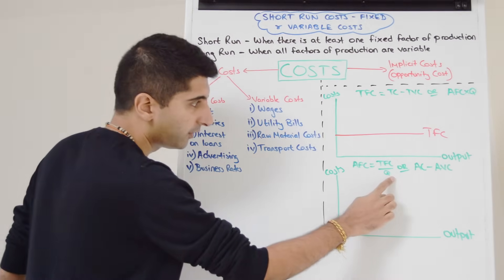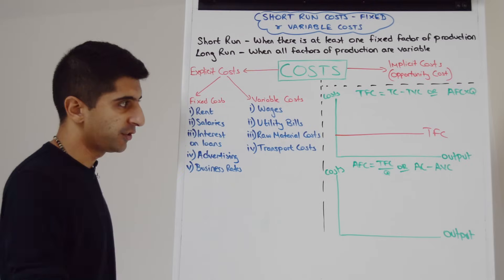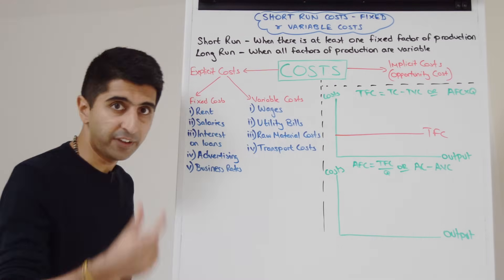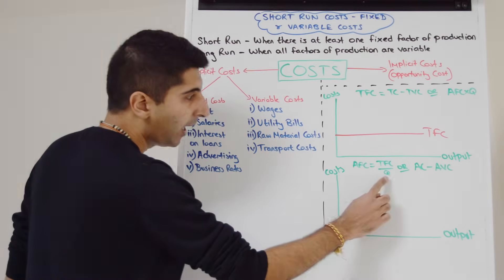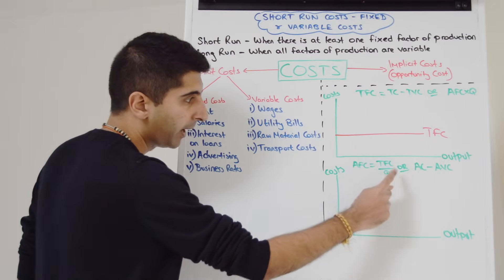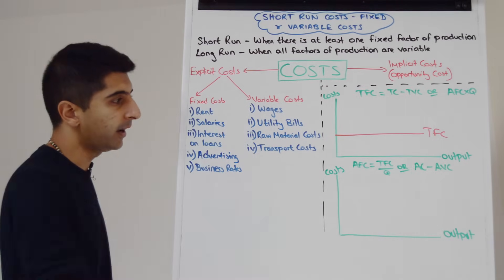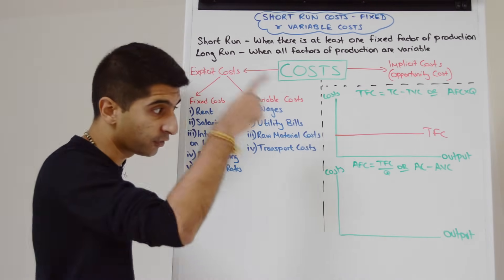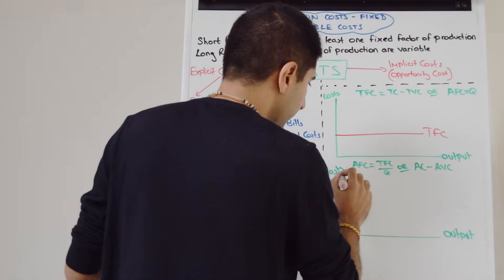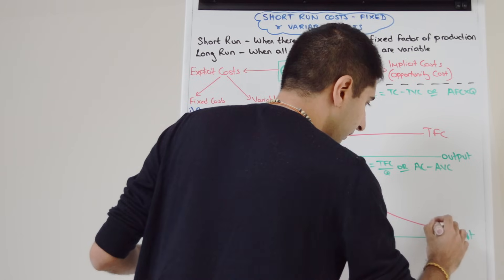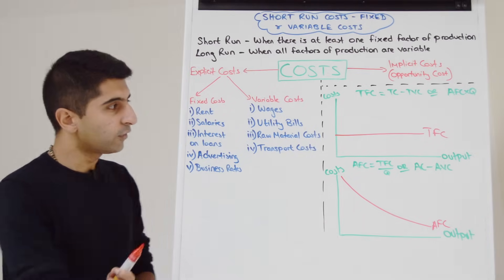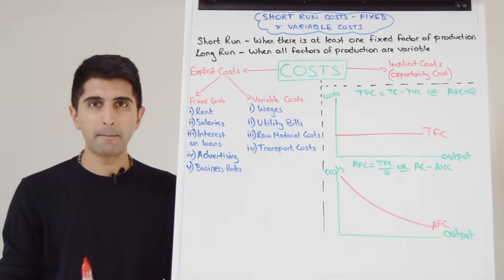Average fixed cost: using the equation TFC over Q, we know that TFC is a fixed, constant number. If Q is rising — output is increasing — you're dividing a constant number by an ever-increasing number, and that means your average fixed cost is going to fall the more that we produce. So average fixed cost is downward sloping. Using this equation, that makes a lot of sense. These two curves are very simple to remember — make sure we learn the equations as well.